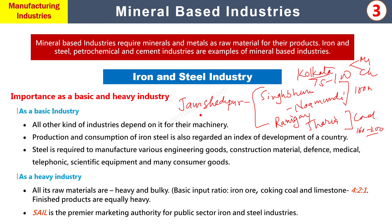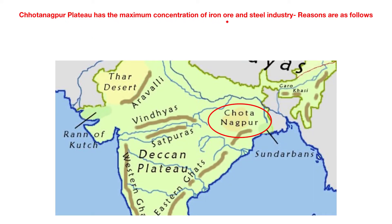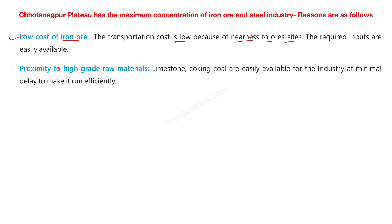Chota Nagpur plateau میں iron ore اور steel industry کا maximum concentration ہے۔ اس کی وجوہات یہ ہیں: transportation cost کم ہوتی ہے کیونکہ ore sites قریب ہیں۔ High grade iron ore اور limestone اس region میں easily available ہیں، جس سے raw materials کی delivery میں minimal delay ہوتی ہے اور efficiently industry تک پہنچائے جا سکتے ہیں۔